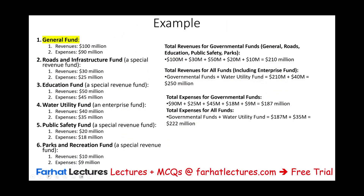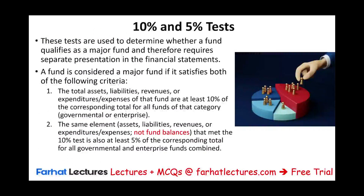To recap: under governmental funds, we report the General Fund (always a major fund), the Roads and Infrastructure Fund (passed both tests), and the Education Fund (passed both tests). Public Safety and Parks and Recreation do not get reported separately — they would be reported combined elsewhere. The Water Utility, as an enterprise fund, also met the 10% and 5% tests. Note: we do not use fund balances as a measurement — only assets, liabilities, revenues, expenses, and expenditures.